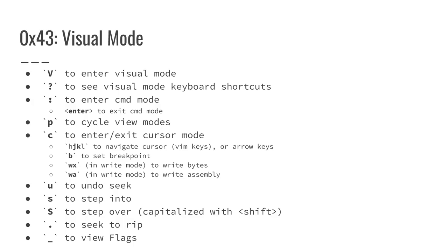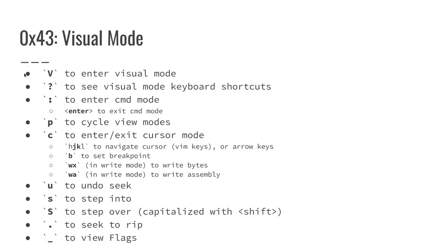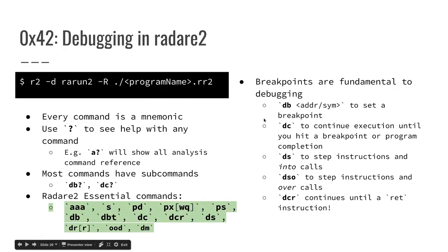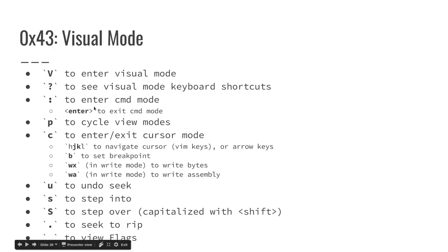When using Radare2, you can enter visual mode by typing a capital V and hitting enter. Visual mode is awesome — it's the best way to do debugging — but it takes over your keyboard. You can no longer enter regular Radare2 commands. The only way to enter regular commands is to type colon to enter command mode. When in command mode all other Radare2 commands work but visual mode is disabled temporarily. To exit command mode, simply press enter.